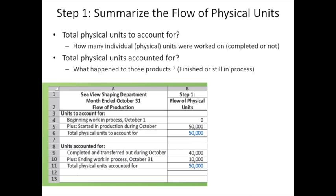Looking at our spreadsheet here, we find the flow of physical units — the units we need to account for. We had none in beginning inventory, then we started 50,000 units in production, so we need to account for 50,000 masks. The way we accounted for them: 40,000 were completed and transferred out during the period, plus we still had 10,000 masks in ending work in process that were not yet completed. So 40,000 plus 10,000 gives us our 50,000 masks completely accounted for.